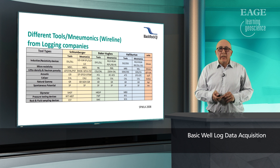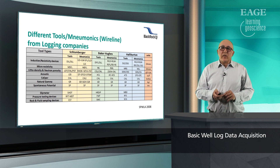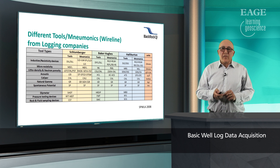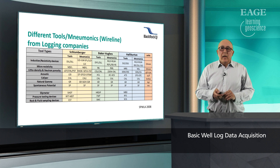In this slide there are different tools and mnemonics from logging companies. The three main logging companies in the industry at the moment are Schlumberger, Baker Hughes, and Halliburton. They have very similar — I'll say the same — tools, but with different names, and they have the same units.